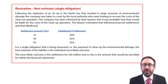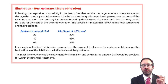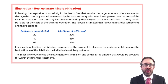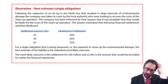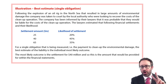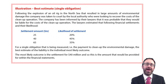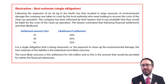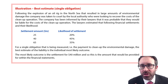When we look at provisions, we recognize a provision if there is a probable outflow of economic benefit and we can measure it reliably, as a result of some form of past event. We're going to go through two illustrations and look at the measurement aspect, because this is where the examiner has a little bit of license to try and catch you out.